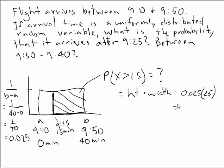And now popping out my calculator again. 0.025 times 25. Did I do that right? 40, 30, yeah. That's 0.625. There's our probability that it arrives then.